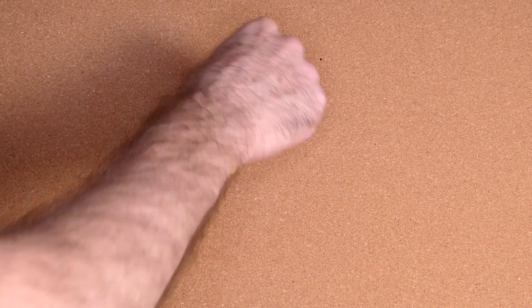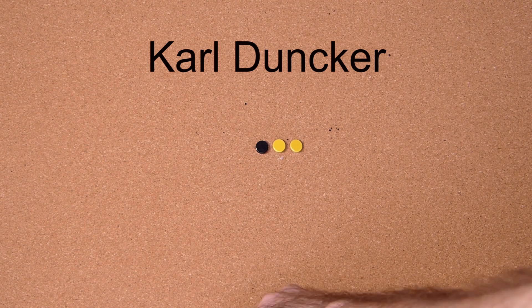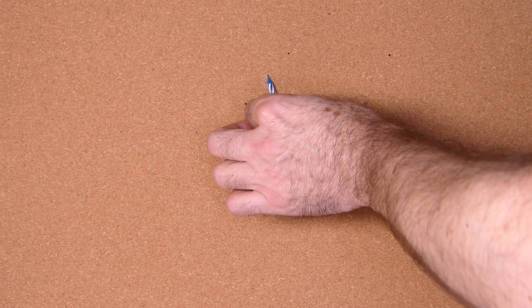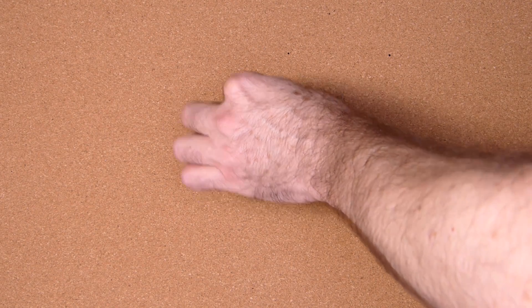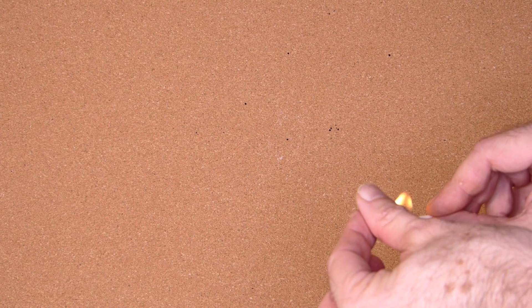The candle problem was the subject of a study by Gestalt psychologist Carl Dunker. In this case, the candle is very small, but a bigger candle wouldn't really help. The wax of the candle isn't strong enough to melt it and hold it to the wall.